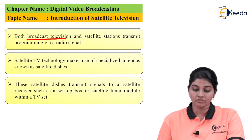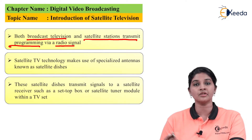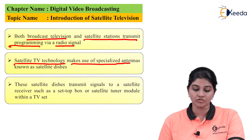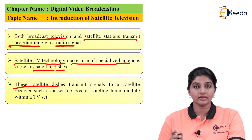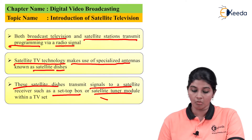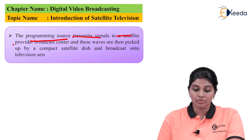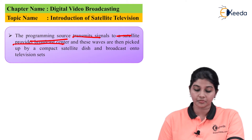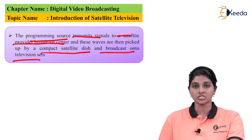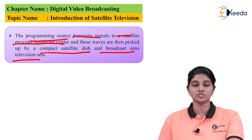Both broadcast television and satellite stations transmit programming by using a radio signal, so the entire communication is based on wireless radio signals. Satellite technology makes use of specialized antennas called satellite dishes. These satellite dishes transmit signals to a satellite receiver such as a set-top box or a satellite tuner module within a TV set. The programming source transmits signals to the satellite provider's broadcast center, and these waves are then applied to a compact satellite dish and broadcast onto the television set.